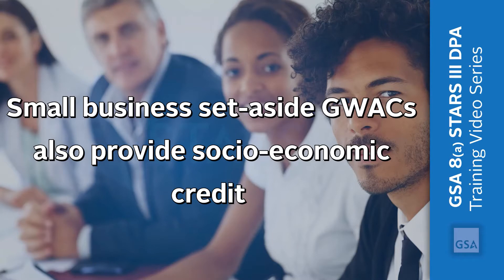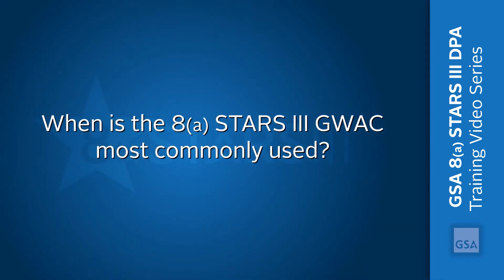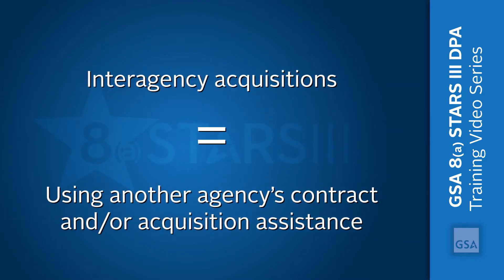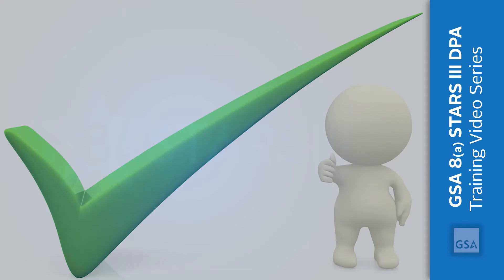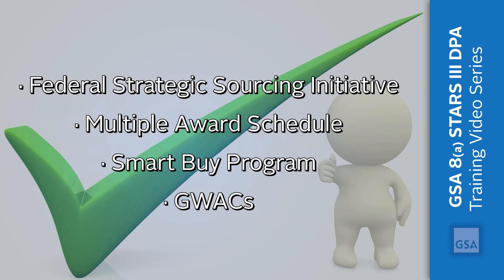The 8STARS III GWAC is most commonly accessed by interagency acquisitions. In this case, an agency needing supplies or services gets them by using another agency's contract, the acquisition assistance of another agency, or both. Agencies may presume that direct acquisitions made by qualified individuals are in the best interest of the government if the vehicle was established under the Federal Strategic Sourcing Initiative, Multiple Award Schedule, the Smart Buy Program, or GWACs.